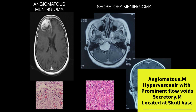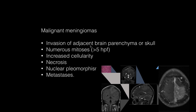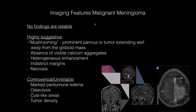Malignant meningiomas generally invade the adjacent brain parenchyma or skull. Numerous mitoses occur in these lesions. They have increased cellularity, necrosis is common, nuclear pleomorphism is seen, and metastasis may occur. Imaging features highly suggestive of malignant meningioma include mushrooming — a prominent peritumoral extension well away from the globoid mass — absence of calcium aggregates, heterogeneous enhancement on contrast studies, indistinct margins, and necrosis.